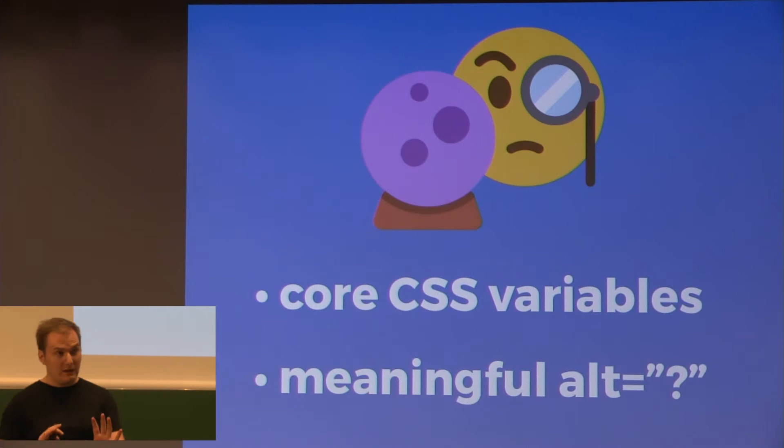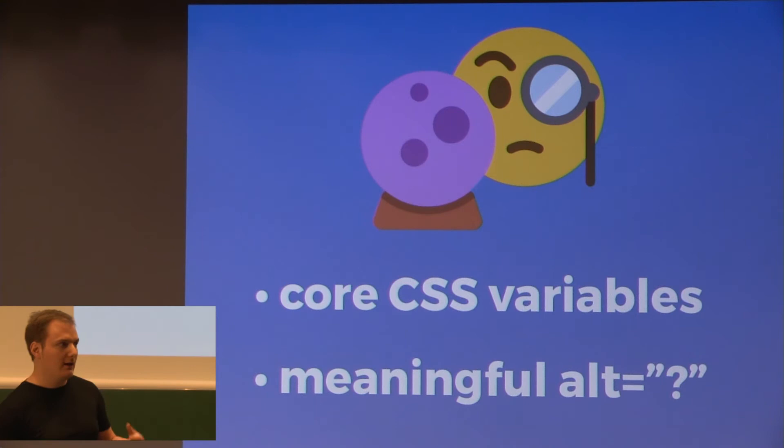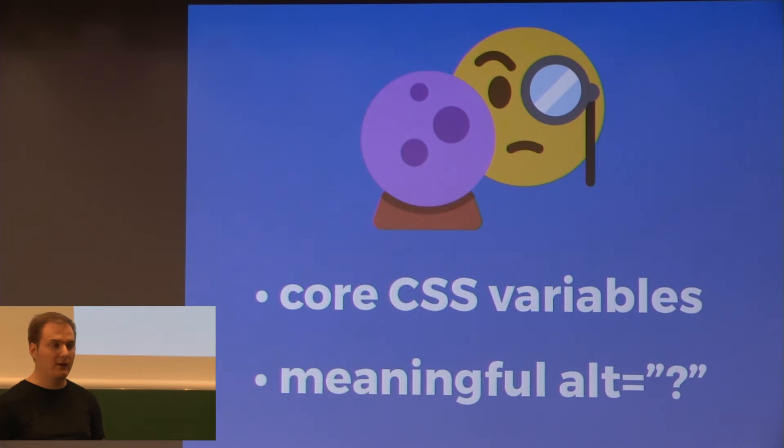Let's start with perceivability — it's basically about being able to see, or that a screen reader can interpret what actually goes on in your app. The easiest thing you can do in your Next.js app is use our core CSS variables for color, text color, and primary color. When you use those, the contrast will automatically be proper to WCAG AA — a conformance level.